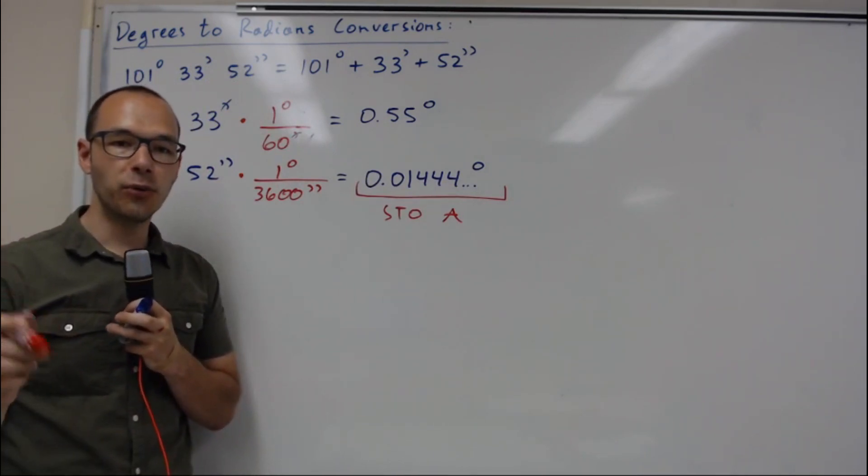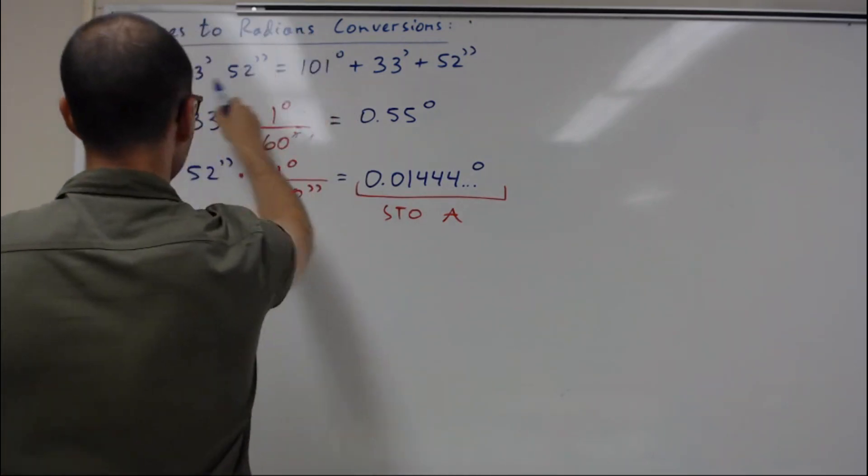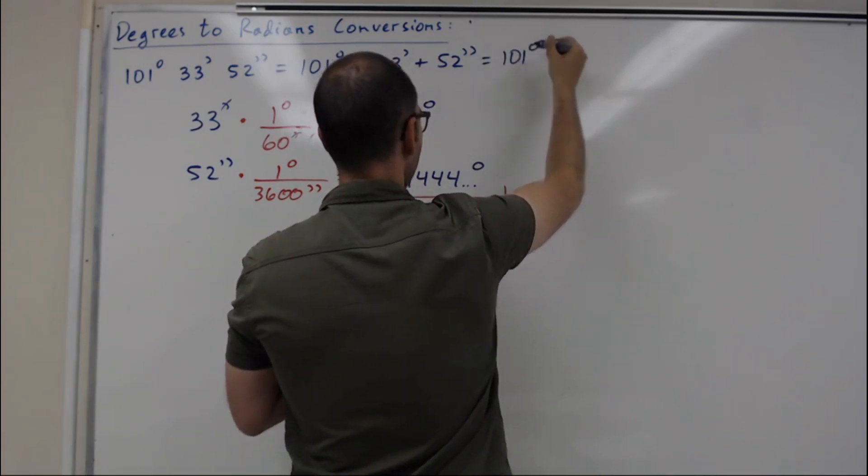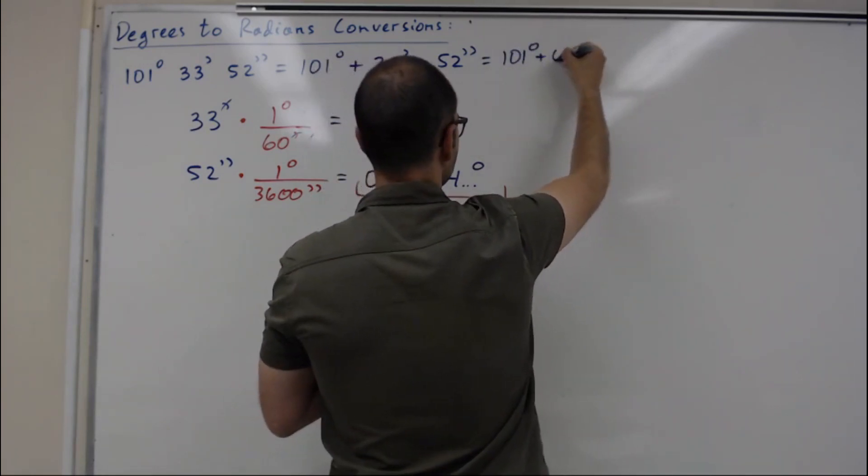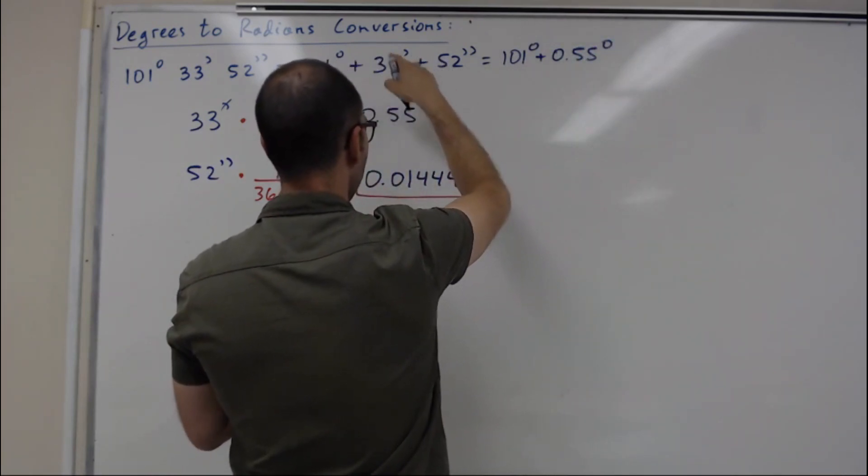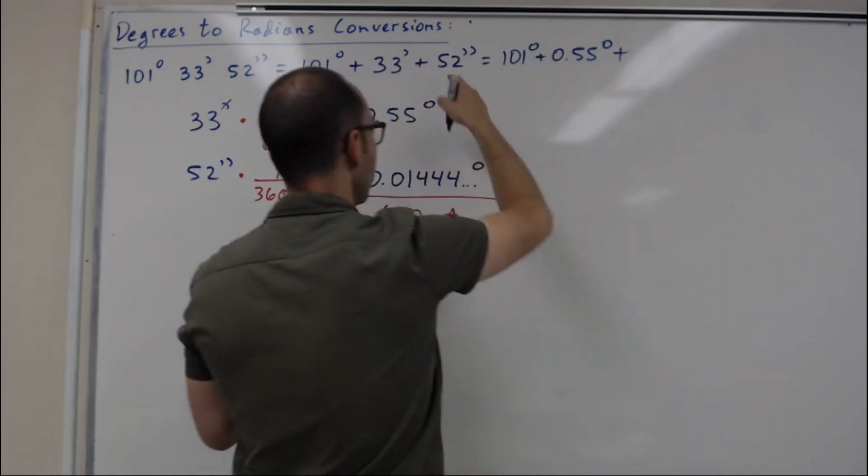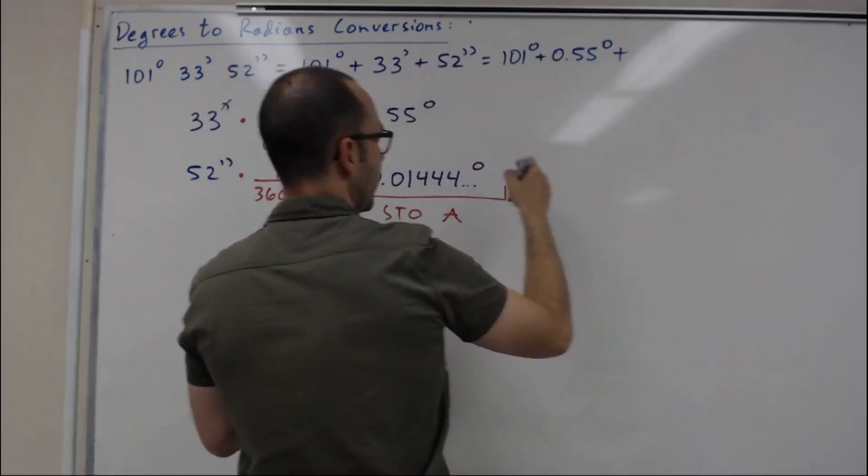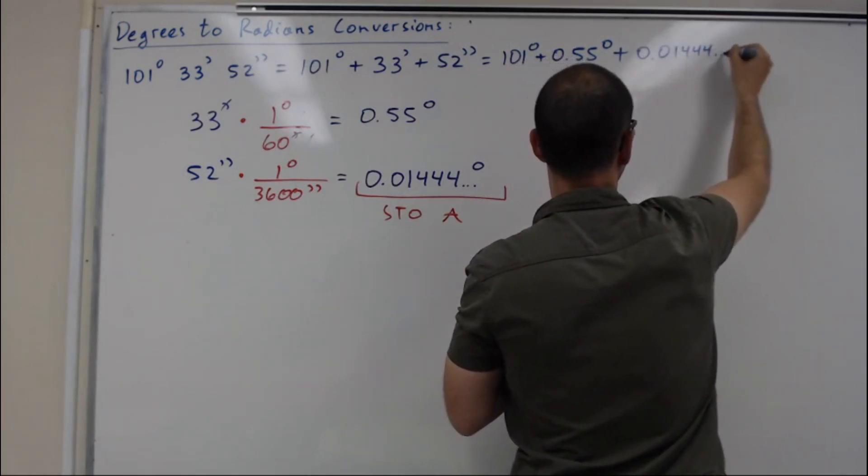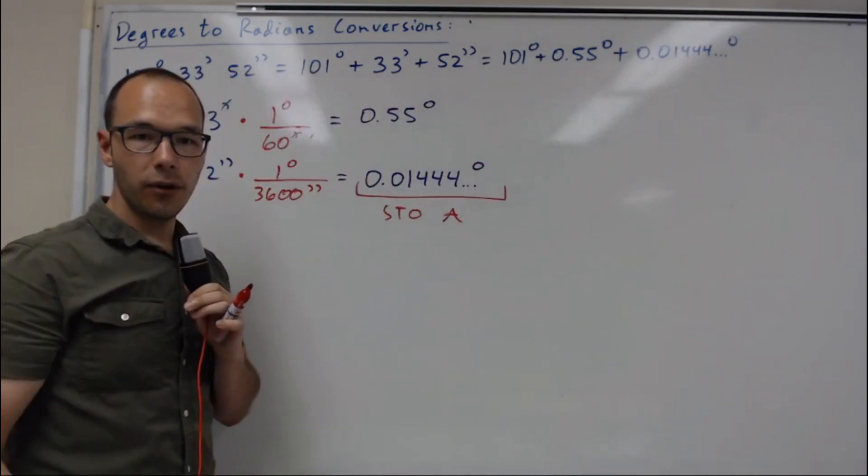We're going to be rounding at the end the final answer. So we can rewrite this angle right here as 101 degrees plus 0.55 degrees because 33 minutes is 0.55 plus 52 seconds, which is 0.01444 degrees. And if we add all of that up,